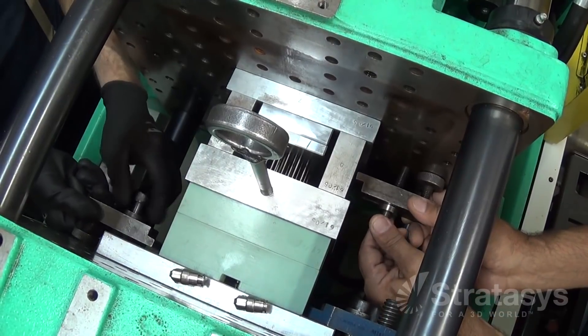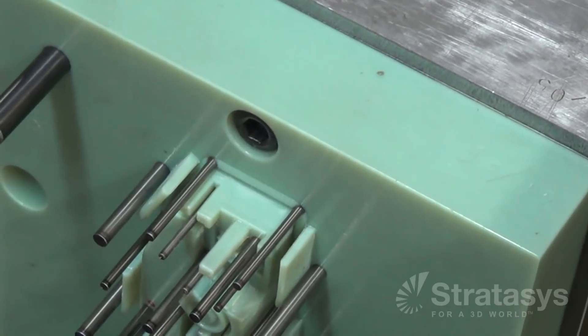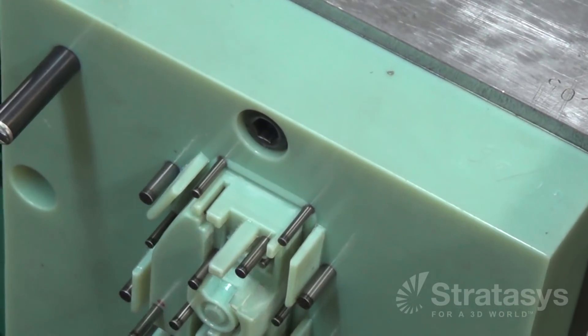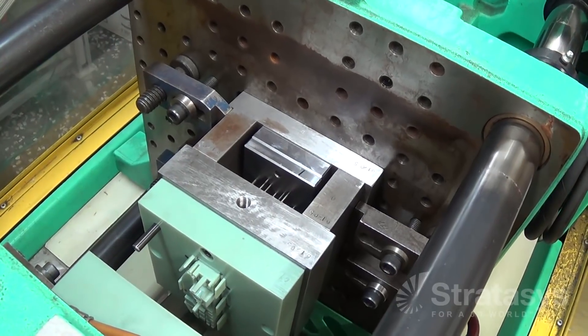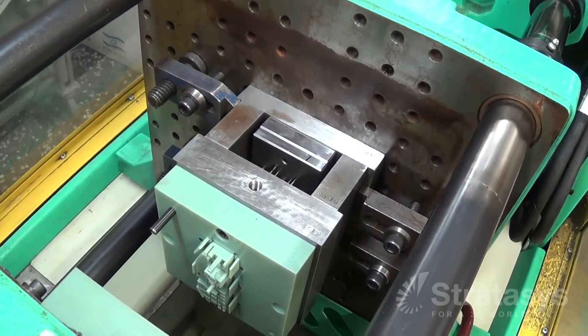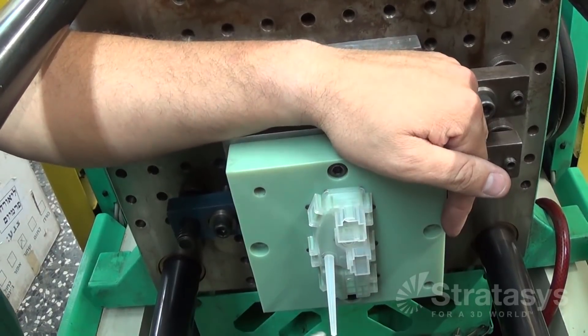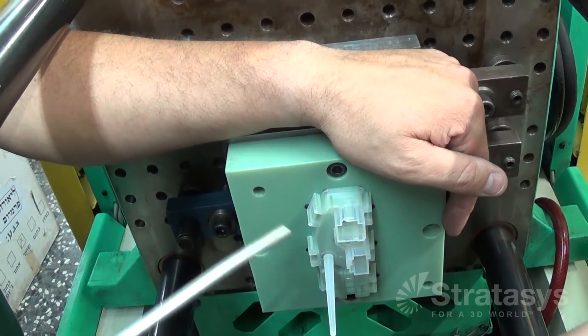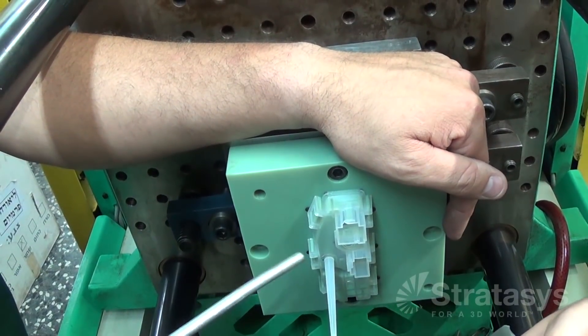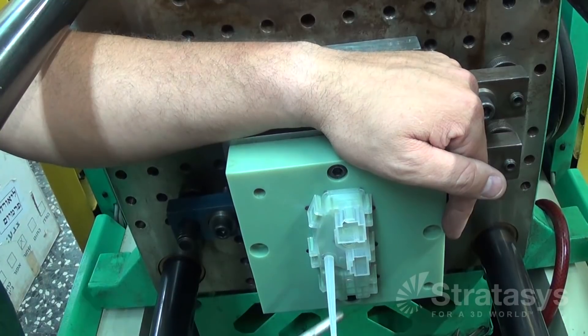Now, you are ready to injection mold parts. With a few adjustments to the machine settings to avoid damaging the printed mold, set the barrel temperature and injection speed to the low end of the recommended range for the thermoplastic. And since plastic molds don't cool as fast as metal molds, increase the duration of the cooling cycle and add a dwell between injection molding shots.